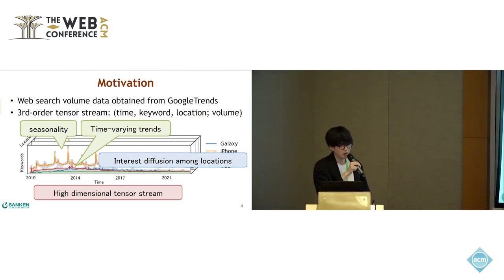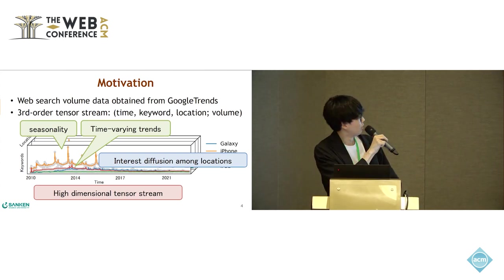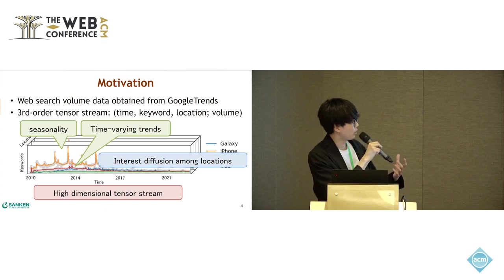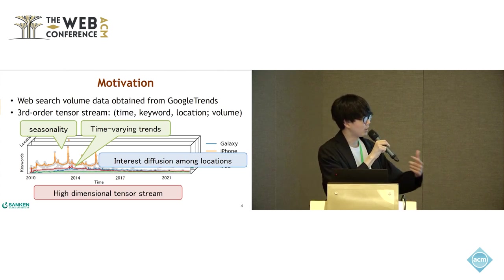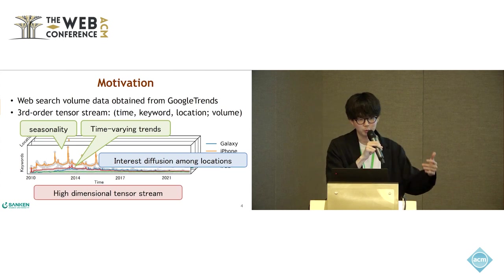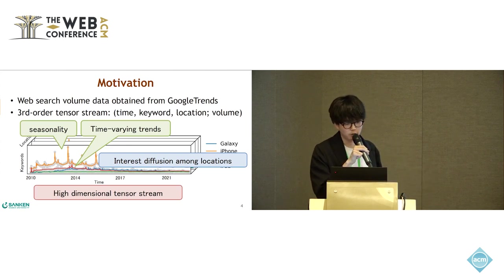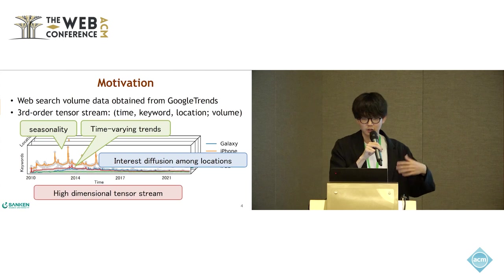First, it has multiple patterns such as trends and seasonality. Next, it is a high-dimensional tensor stream. For example, there are over 100 countries in the world, and the length of the stream is not bounded — it is infinite. Importantly, there are interest diffusion patterns in data streams. For example, interesting revolutionary products such as iPhone and iPad diffuse across countries.